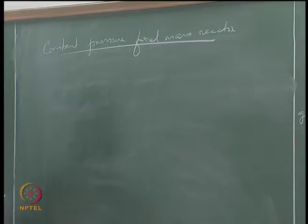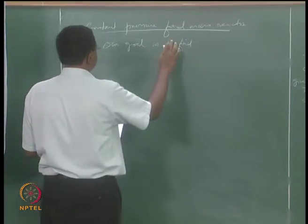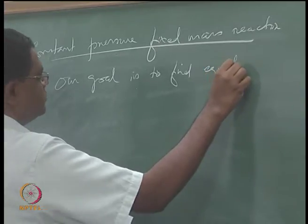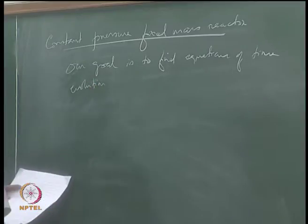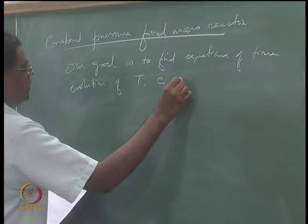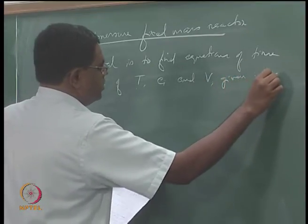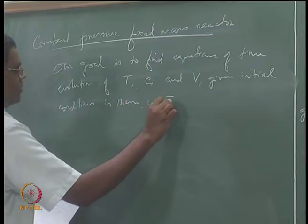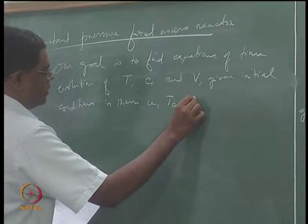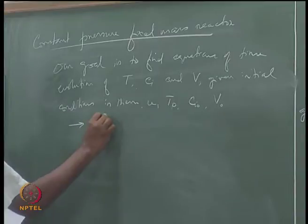Our goal here is to find the evolution of T, C_i, and V given initial conditions: T_0, C_i0, and V_0. This is what is called an initial value problem, or IVP.